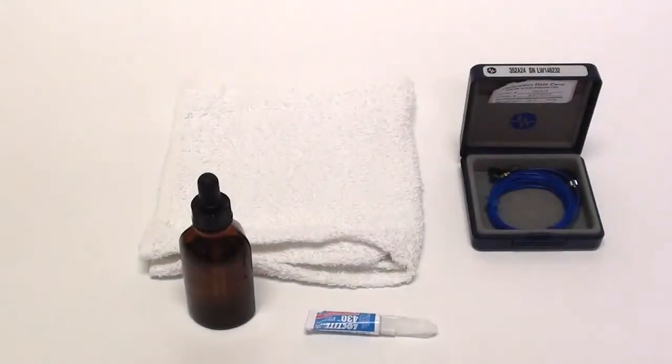Miniature or teardrop accelerometers are a common choice when weight of the transducer must be kept to a minimum. Mounting and removal of these sensors require special care to avoid damaging the delicate lightweight construction.